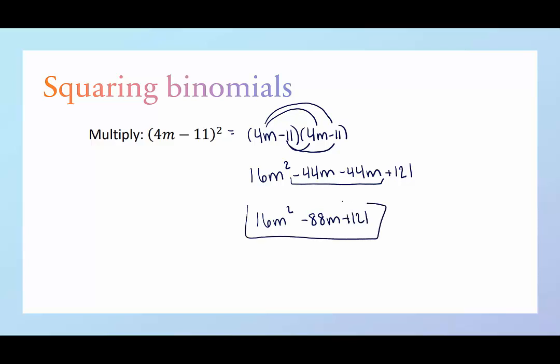And just so we know, if you chose to do the shortcut, what you do is you take the first term and square it, so that's the 16m squared. You take the last term and square it, minus 11 squared is 121.